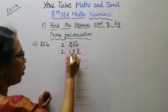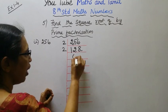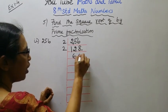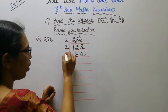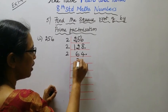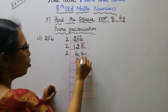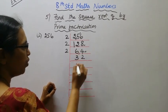Continuing, 2 into 32 is 16. Divide by 2, 2 into 16 is 8. Again 2, 2 into 8 is 4.